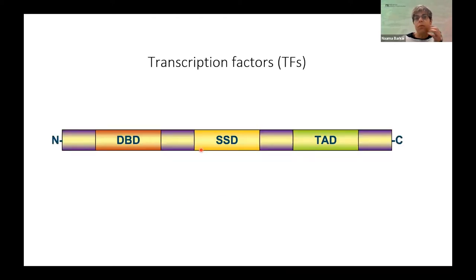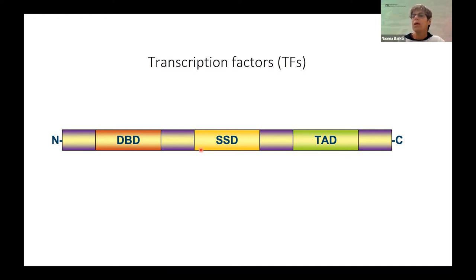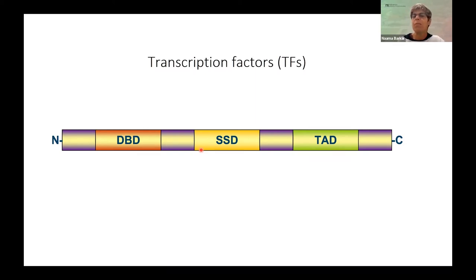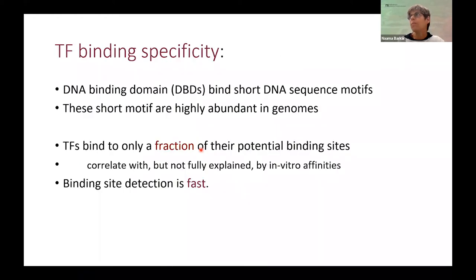We all know what a transcription factor looks like in rough representation. A transcription factor usually has a DNA binding domain and a non-DNA binding domain — everything outside the DNA binding domain. Regions outside the DNA binding domain have different functions; for example, they can be the activation domain or participate in protein-protein interactions. But binding to locations where things must happen on the DNA is mediated by the DNA binding domain.